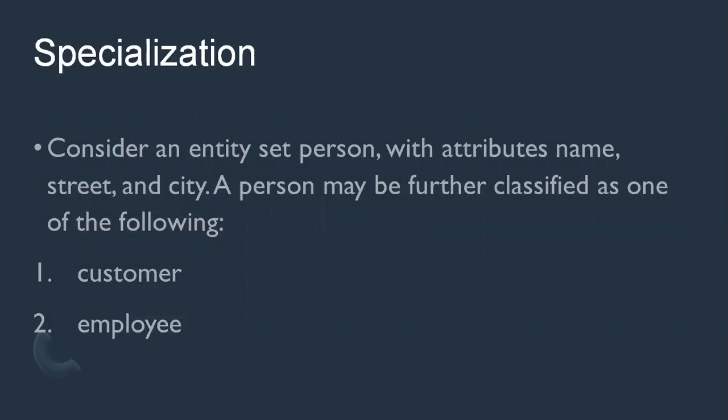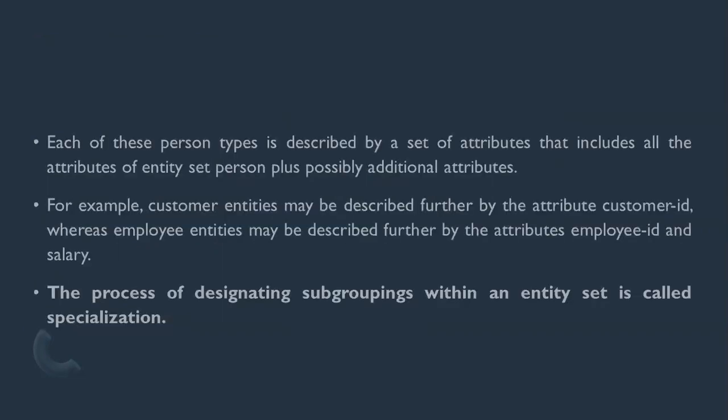A person has name, address, and many attributes, but a person cannot have both customer ID and employee ID at the same time. So for that purpose, person is specialized into two different entities: customer and employee. Each person type is described by a set of attributes that includes all attributes of the person entity plus possibly additional attributes. Customer entities may be described further by customer ID, whereas employee entities may be described further by employee ID and salary.